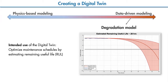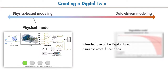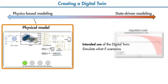This degradation model is constantly updated using data from the pump measured by different sensors such as pressure, flow, and vibration. If our intended use of the digital twin is different — say we want to simulate future scenarios and monitor how the fleet will behave under those scenarios — then we can use physics-based modeling. An example would be a physical model like this one, created by connecting mechanical and hydraulic components together. This model is fed with data from the pump, and its parameters are estimated and tuned with this incoming data to keep the model up to date.